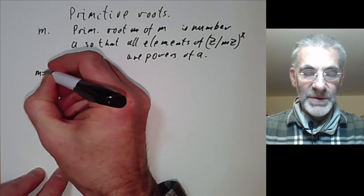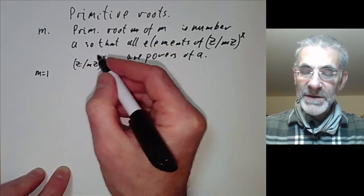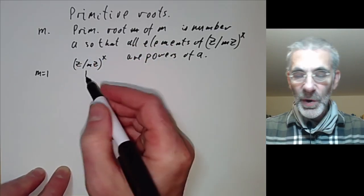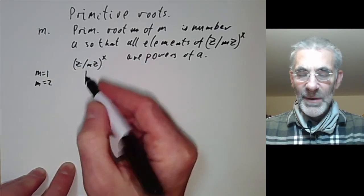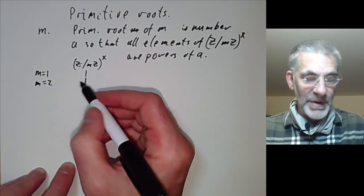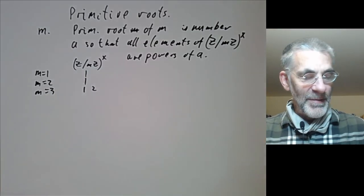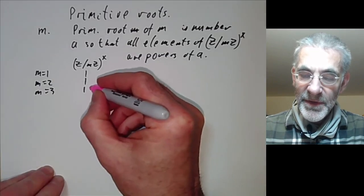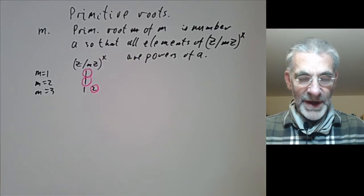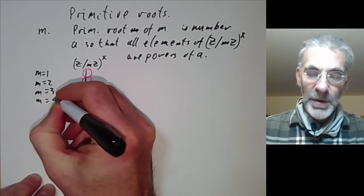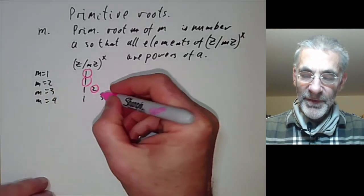Suppose you take m equals 1: (Z/mZ)* has just one element, 1, and that's obviously a primitive root — trivial. For m equals 2 it's equally trivial, just one element that's a primitive root. For m equals 3 there are two elements, and both of them are powers of 2, so 2 is a primitive root (shown in fluorescent pink). For m equals 4 there are just two elements and again there's an obvious primitive root.